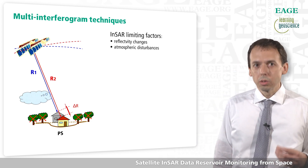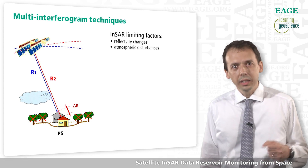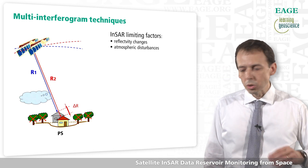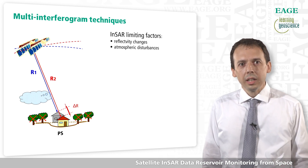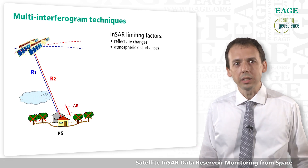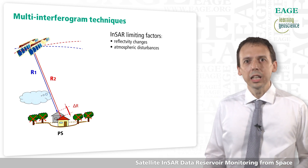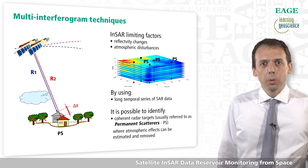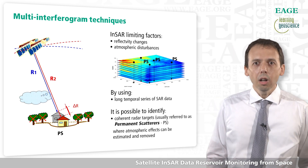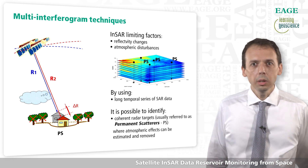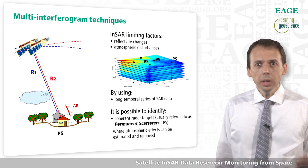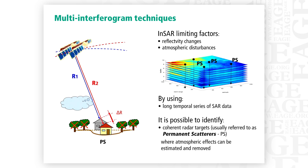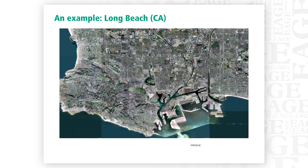But sometimes it's not that easy. That's why, in the late 1990s, different techniques were developed to deal with reflectivity changes — you cannot measure a fraction of a wavelength on a tree or in very vegetated areas — and to deal with atmospheric disturbances in the troposphere and ionosphere. The recipe is not to use just two images, but a long temporal series of SAR data. You identify coherent radar targets, remove atmospheric effects, and estimate the real time series of deformation affecting a certain radar target.